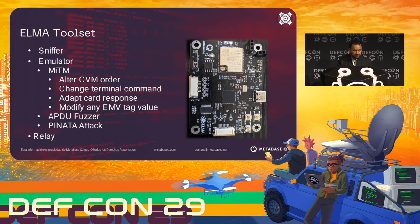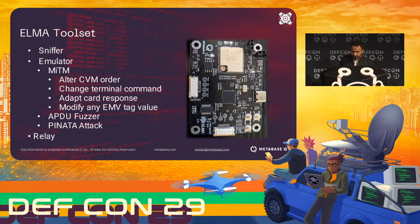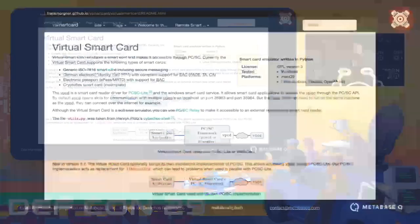Another specific tool is the APDU fuzzer, which basically sends scrambled data to the terminal or card to see how they respond — stressing and implementing different behaviors in the data. Finally, we have the relay attack, where the device could be remotely in another location and the card in another place, sending data over the internet. Inside the client we have the virtual smart card project, which basically lets you emulate a Visa or any EMV card using software. This is at the core of the ELMA client side.